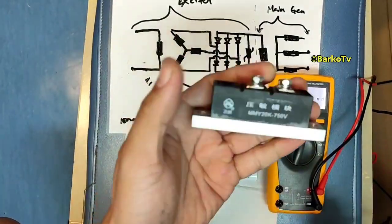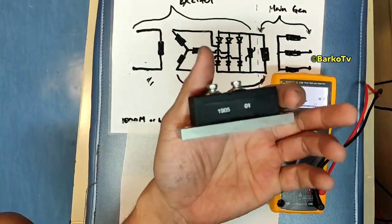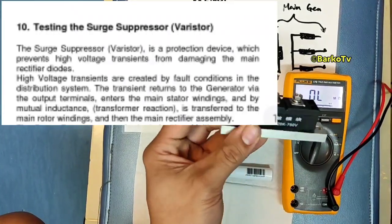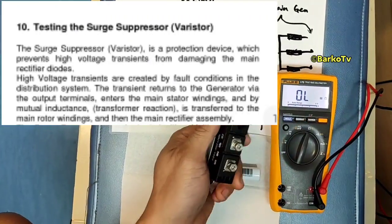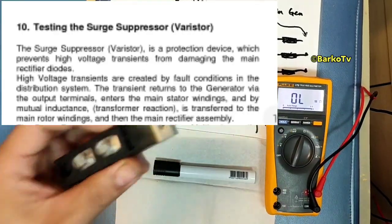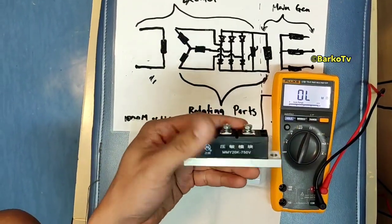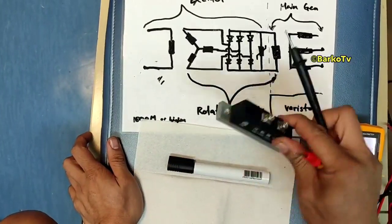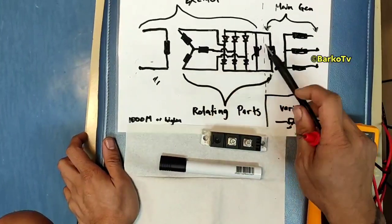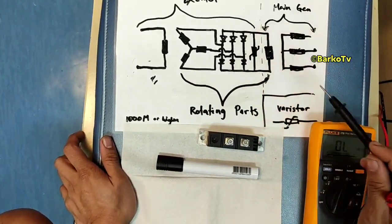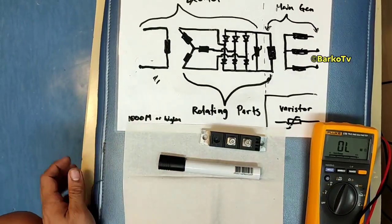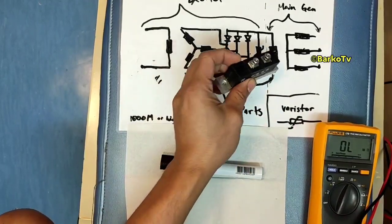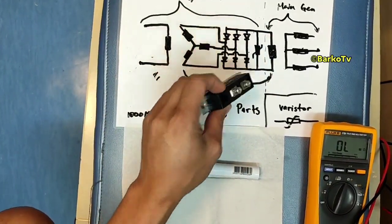But the good suppressor - this is also called surge suppressor - because it is the protection of our diodes. Prevent high voltage, transient high voltage or surge voltage. The purpose of this varistor is only to protect these rotating diodes from damage. The main purpose is to protect this main diode.